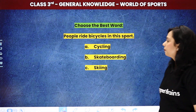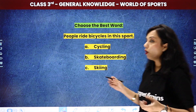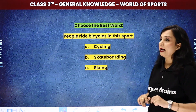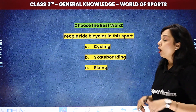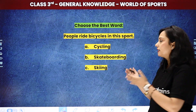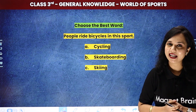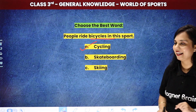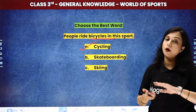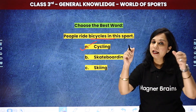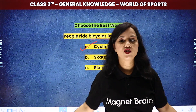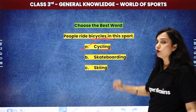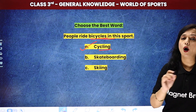Now, people ride bicycles in this sport. It's a very simple question. The options are: A — cycling, B — skateboarding, C — skiing. In skateboarding you need a board, and in skiing you need a board and two sticks. But the sport with cycling in the name is obviously cycling. So the answer is A option — cycling, because you need a bicycle and the sport's name itself is cycling.